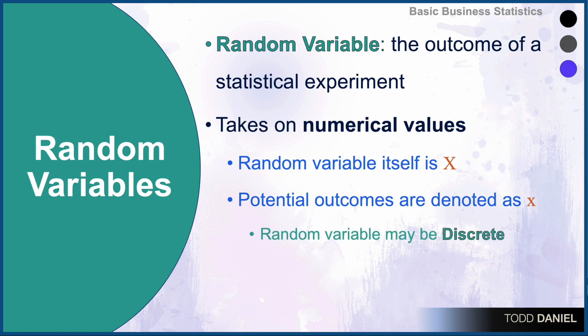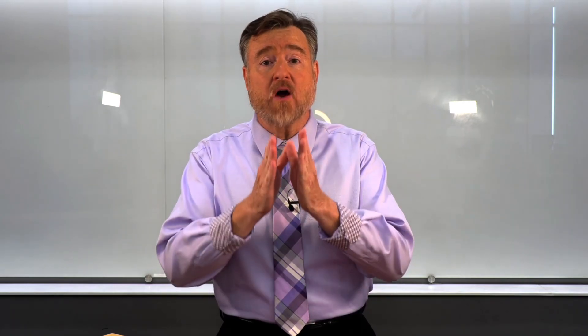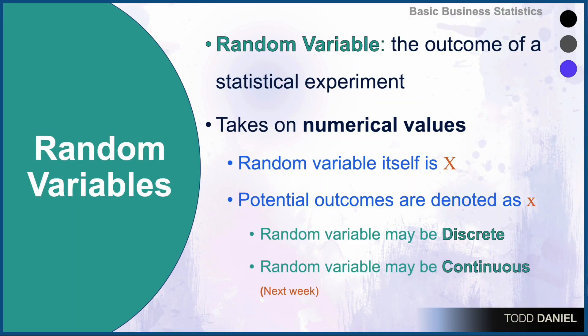There are two types of random variables that we're going to explore in this class. The first is discrete random variables, which can take on only integer or whole number amounts. Continuous random variables, on the other hand, can take on values within a range. This week we're going to focus on discrete random variables, and next week we'll turn our attention to continuous random variables.